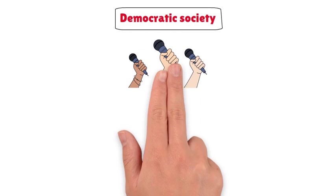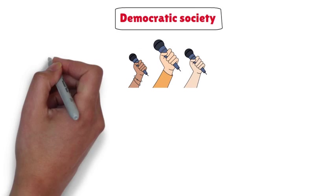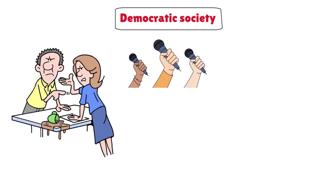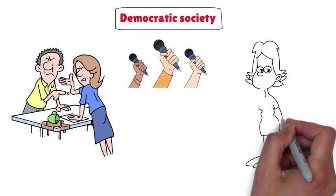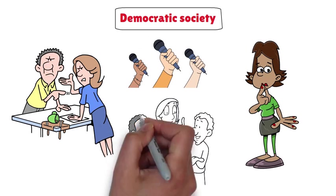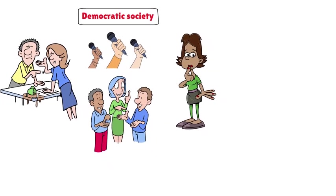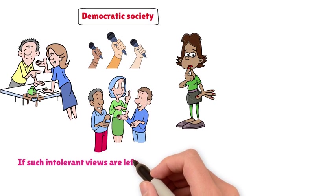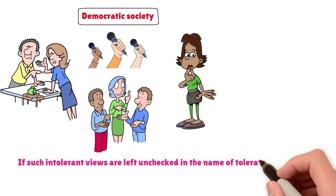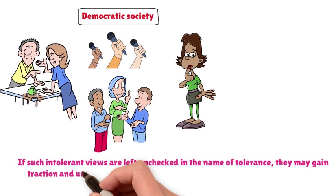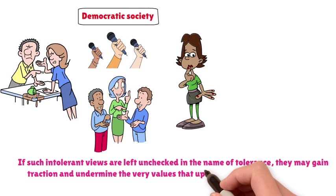Consider the example of a democratic society that upholds freedom of speech. While this freedom is essential for fostering diverse perspectives and healthy debate, it becomes problematic when it allows hate speech or ideologies that advocate for the suppression of certain groups. If such intolerant views are left unchecked in the name of tolerance,